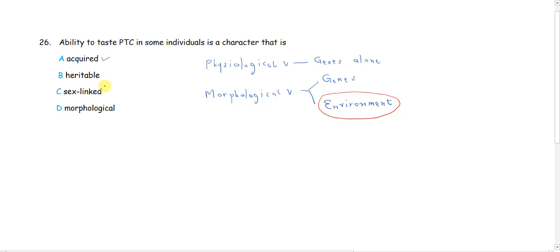The ability to taste PTC is actually a physiological function. It has to do with how your body works, what your body is able to do. So, saying that it is acquired does not correspond to that. Because if you say it is acquired, it is due to the environment. And if it is due to the environment, therefore it falls under morphological variation.